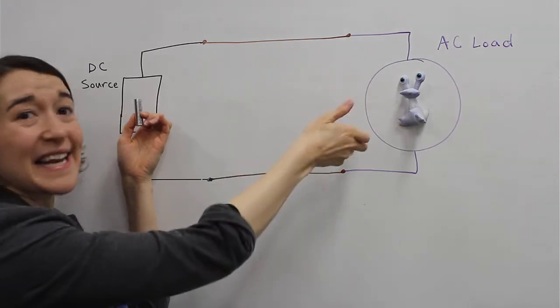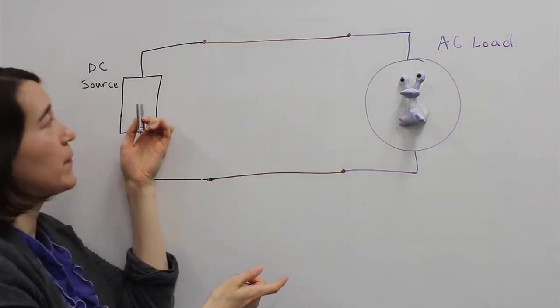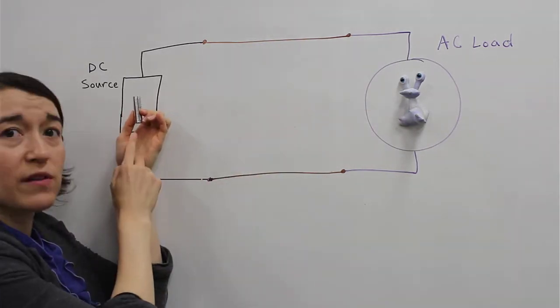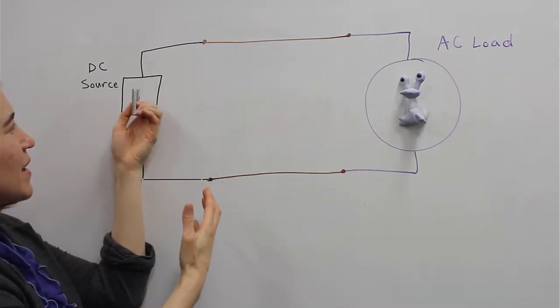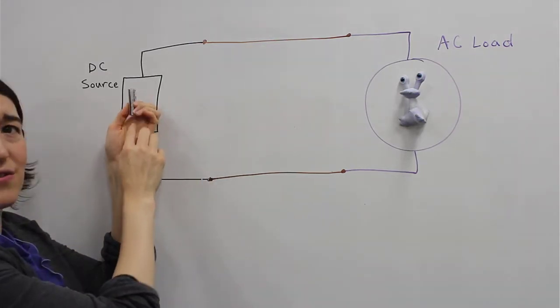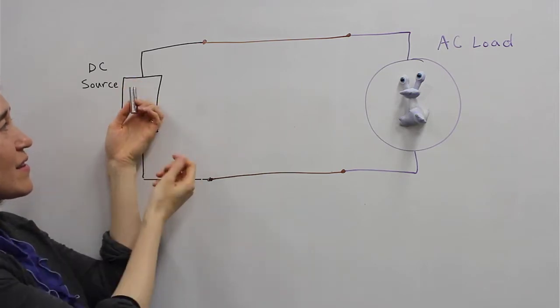But Valerie needs positive and negative because she's an AC load. We only have this one voltage, so in essence what we want to do is have positive to negative for a little bit, and then switch it.